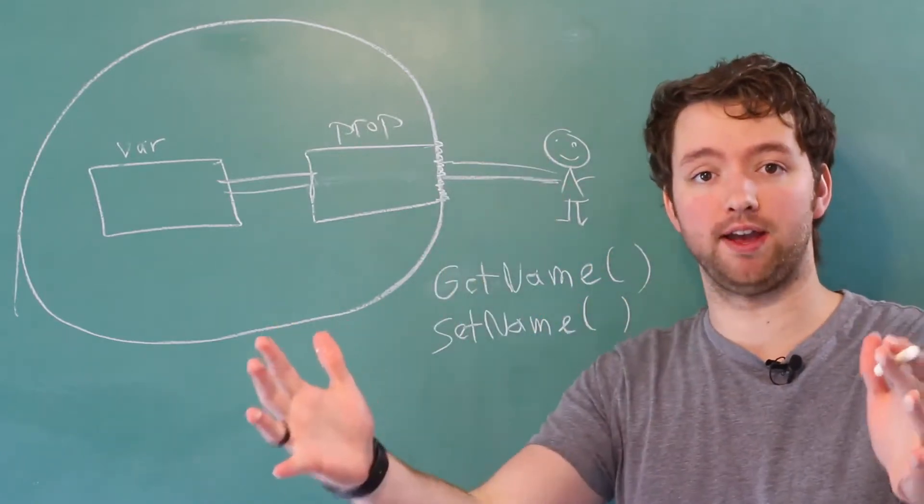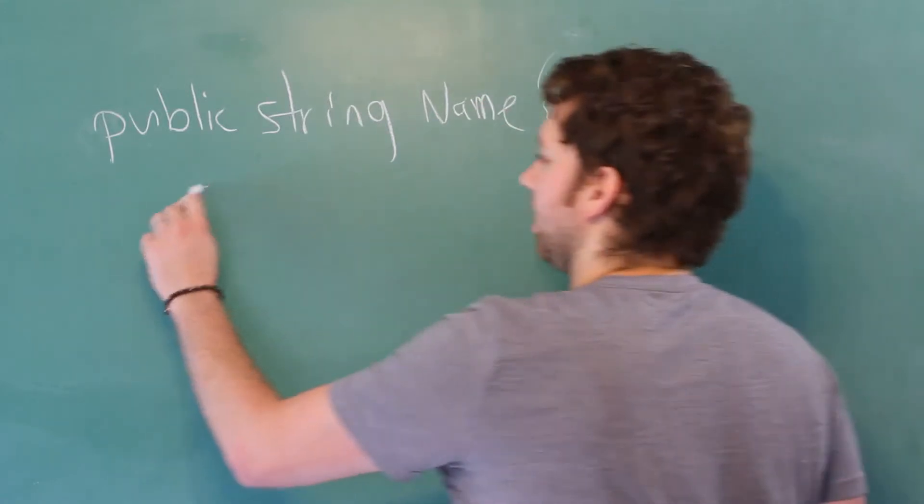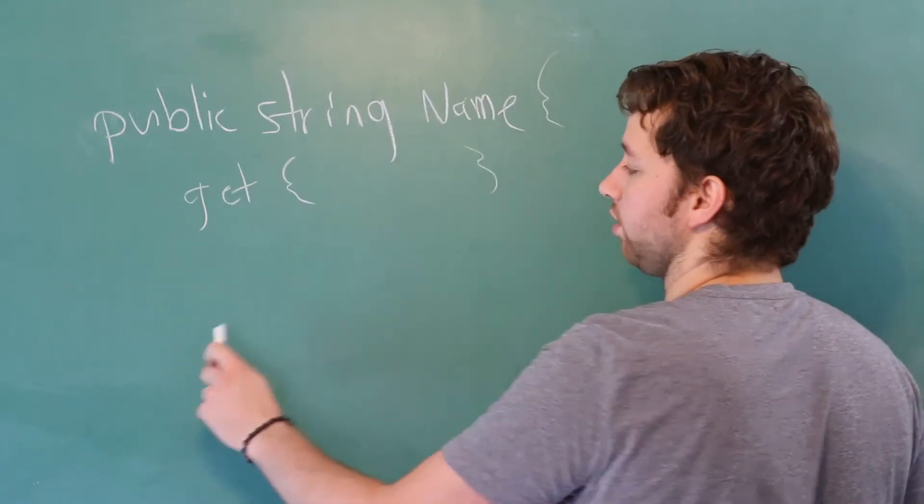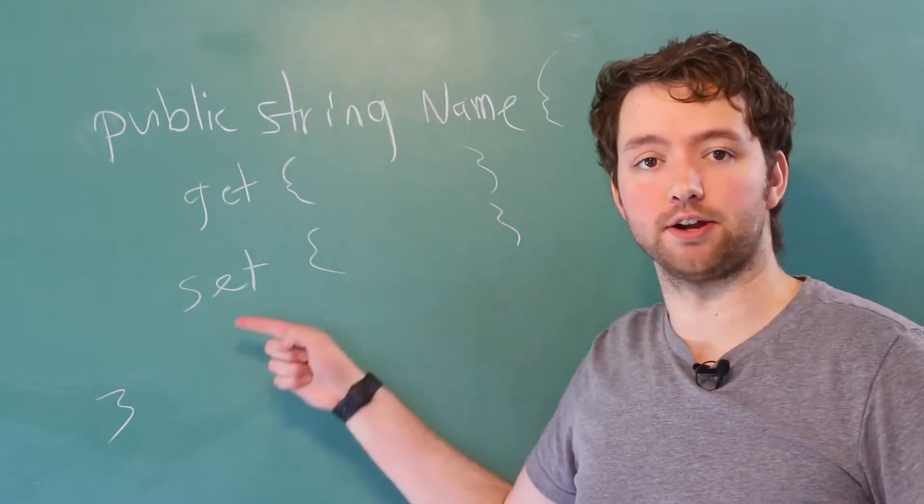But in C Sharp, there's a better way. When we have a property such as name, there is a get piece that we can create. And we can put code in there. And there is a set piece.